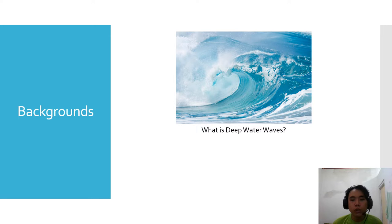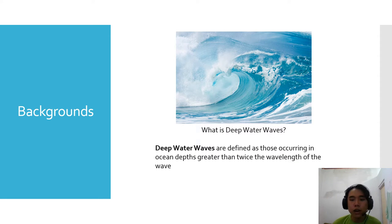So what is deep water waves? Deep water waves are defined as those occurring in ocean depths greater than twice the wavelength of the wave.